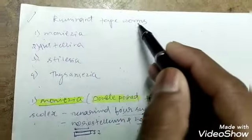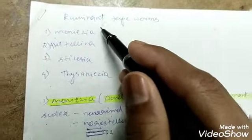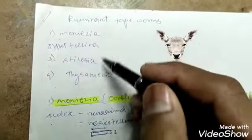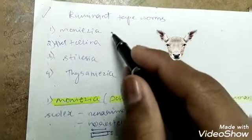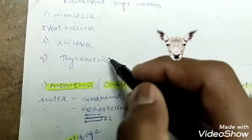In this video we will learn about tapeworm of ruminants. Generally there are four genera where we find the ruminant tapeworms: Moniezia, Avitellina, Stilesia, and Thysaniezia.